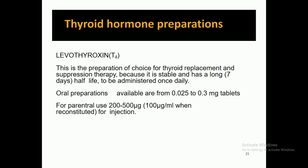Thyroid hormone preparations: the first one is levothyroxine, called T4 or tetraiodothyronine. This is the preparation of choice for thyroid replacement and suppression therapy because it is stable and has a long seven-day half-life, to be administered once daily.